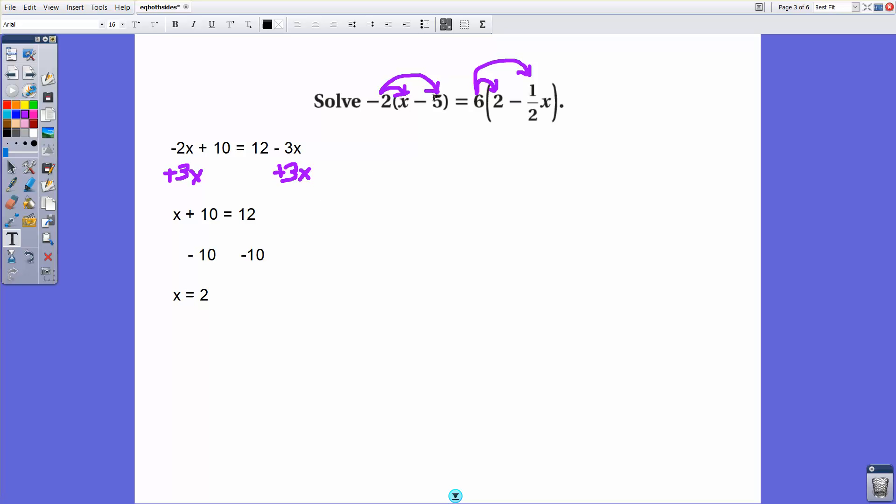If I do 2 minus 5, that's negative 3. Negative 3 times negative 2 is positive 6. If I do 2 minus half times 2, that's 1. So that's 2 minus 1, which is 1. And then 6 times 1 is 6. So I get the same value on both sides. So this solution checks out.